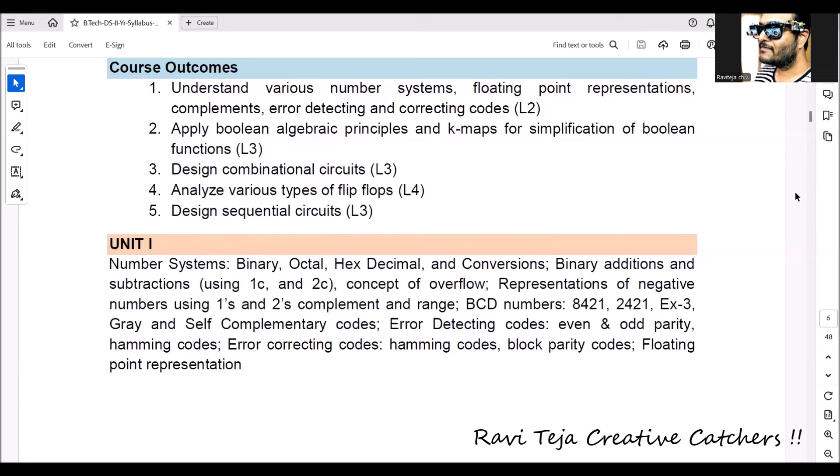Using one's complement and two's complement, we are going to perform some subtractions. We are going to see the concept of overflow and representation of negative numbers in one's and two's complement. We also come across 8421, 2421, XS3, Gray code, all these kinds of formats.